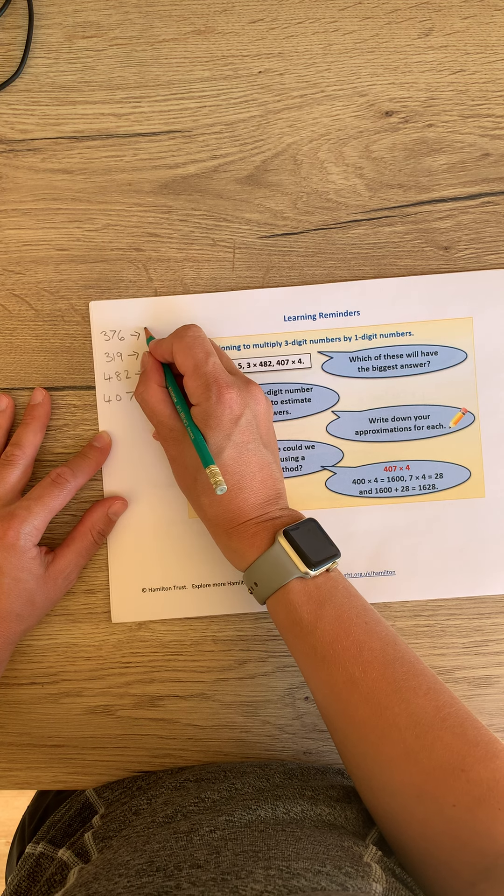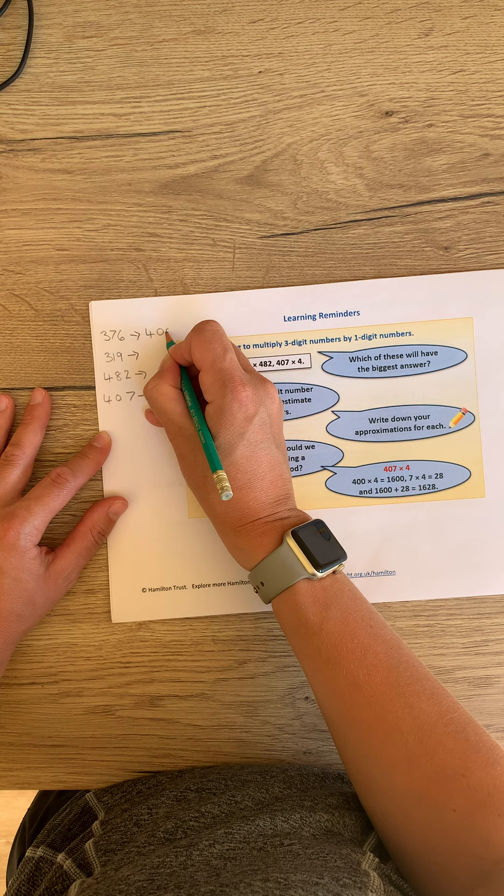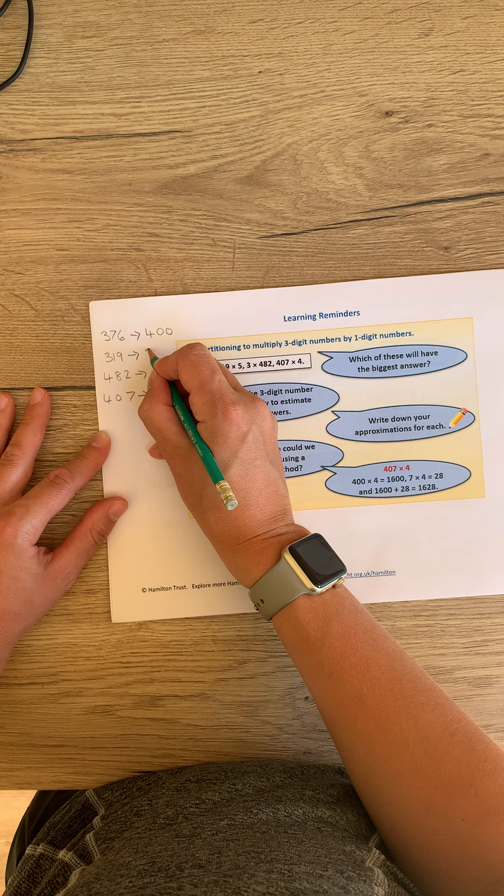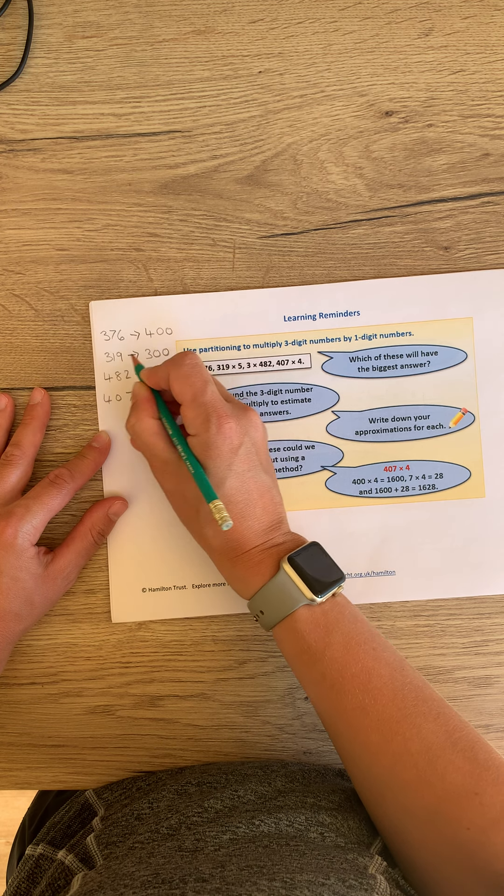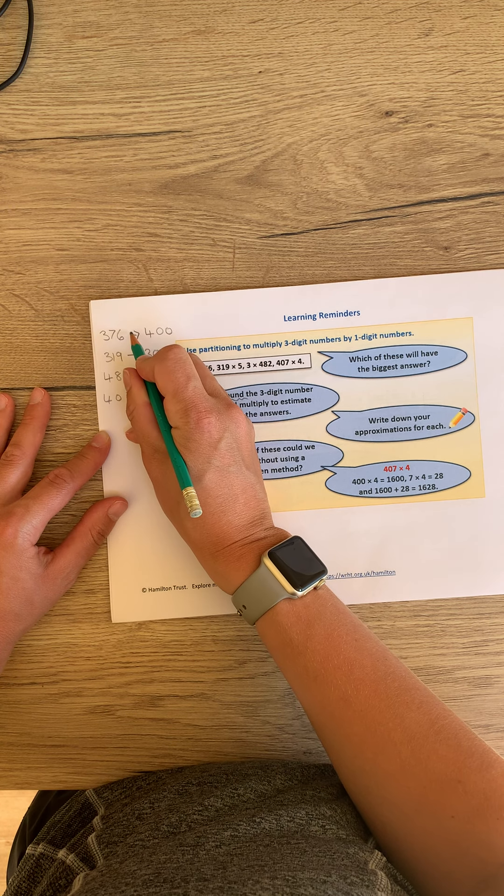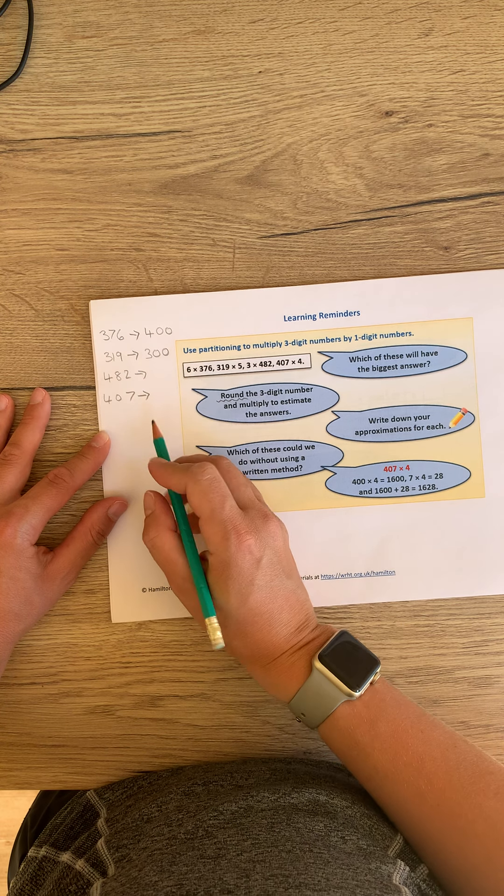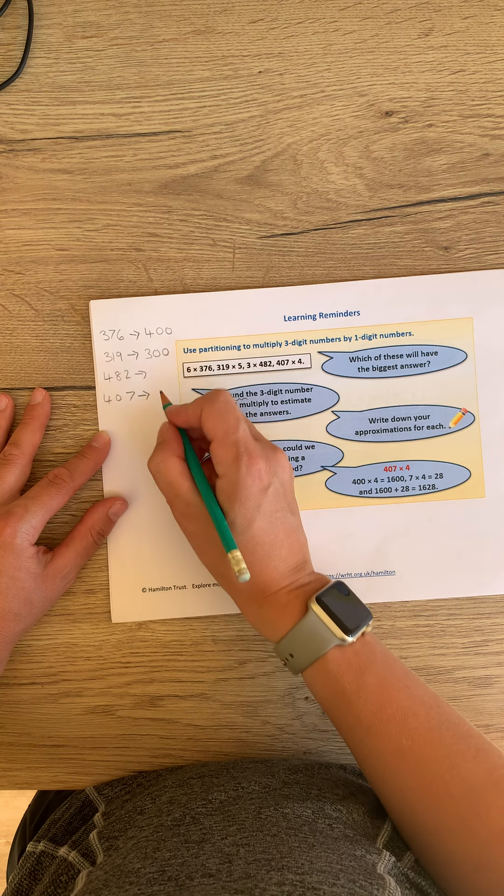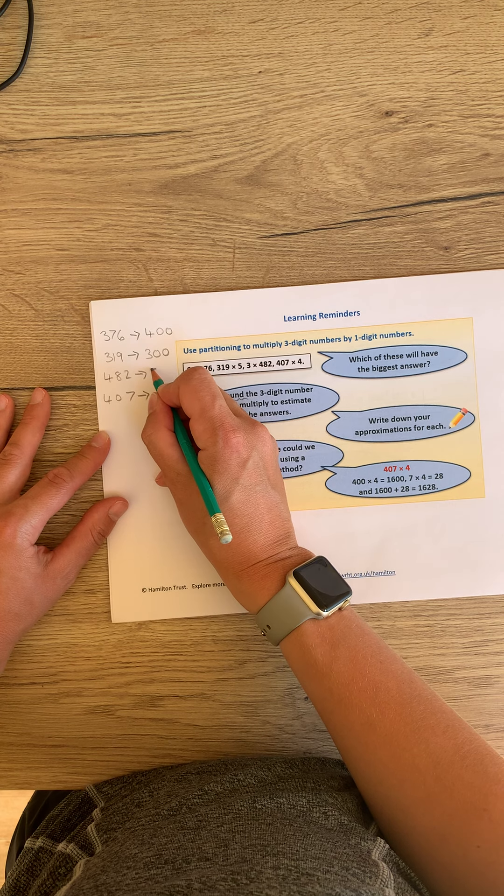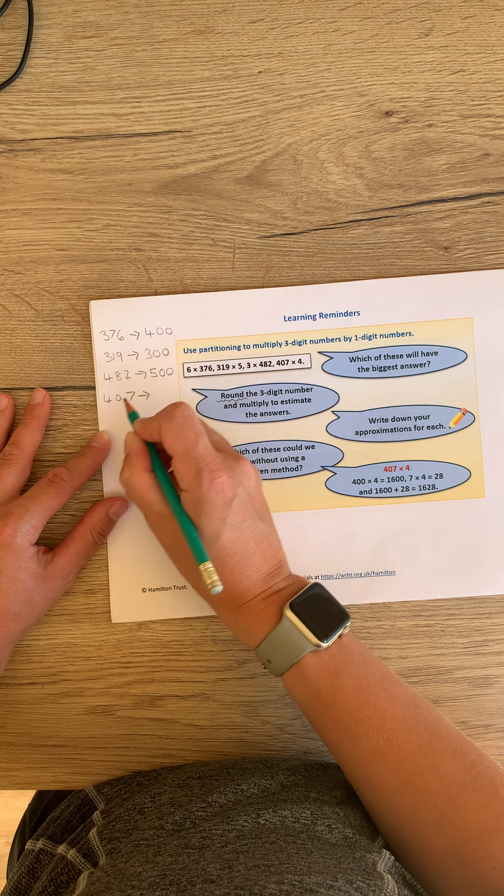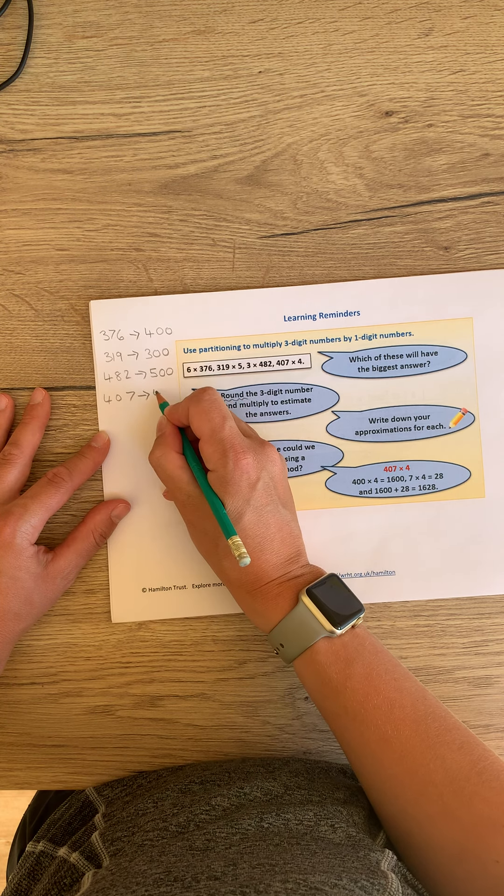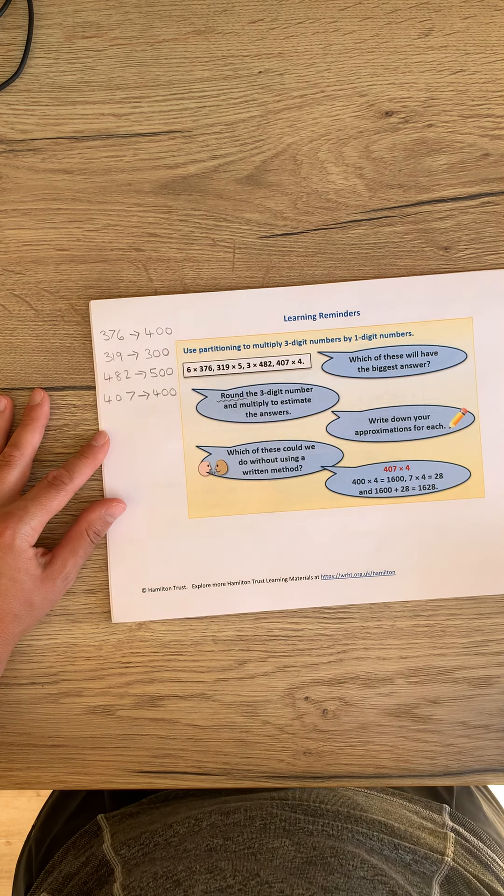Well done if you said 400 for this one. Well done if you said 300 for this one. The first one we were rounding up to 400. This one we were rounding down to 300. 482, we round up to 500, and 407, we round down to 400.